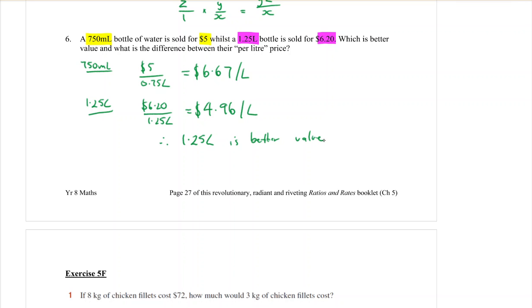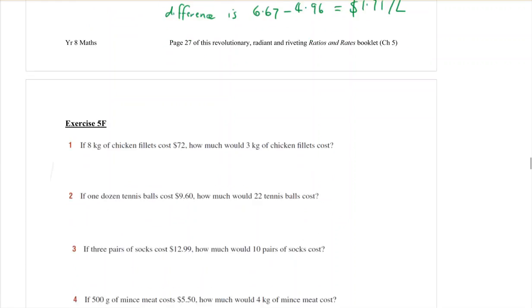The question also asked me to find the difference in the per liter cost. The difference means to subtract. So the difference is going to be the $6.67, the higher cost, and if I subtract off the $4.96, when you subtract them you get $1.71 per liter cheaper if you buy the bigger bottle. That is it. That's our theory part. You need to do 5F.